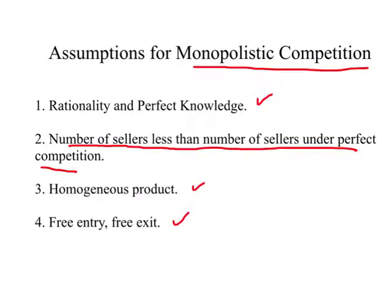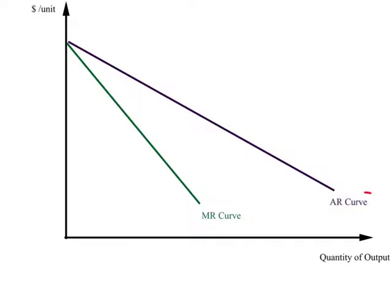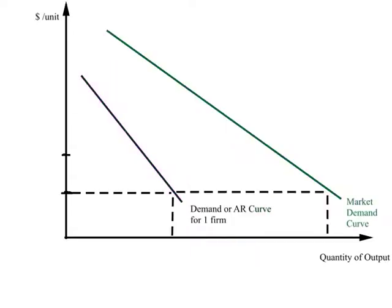A firm under monopolistic competition will face a downward sloping demand curve. So the demand curve or the average revenue curve for a firm under monopolistic competition will be downward sloping, indicating that this firm can sell more at a lower price. If the average revenue curve is downward sloping, marginal revenue will be less than average revenue. In terms of the diagram it looks much like what we had for a monopolist.